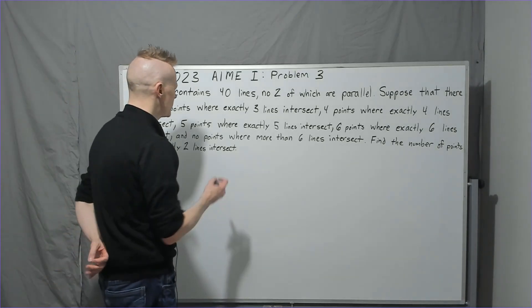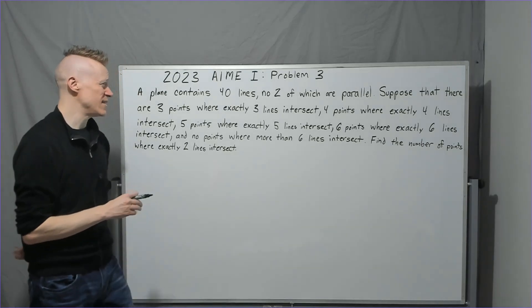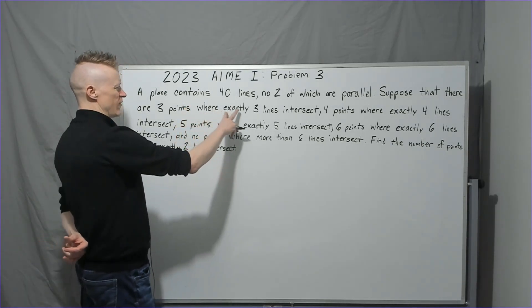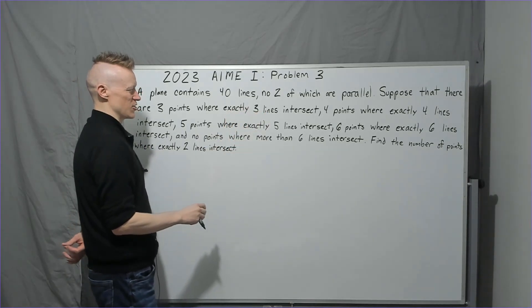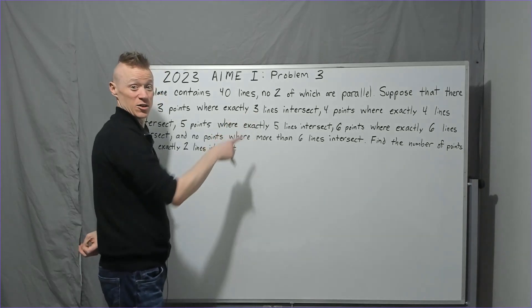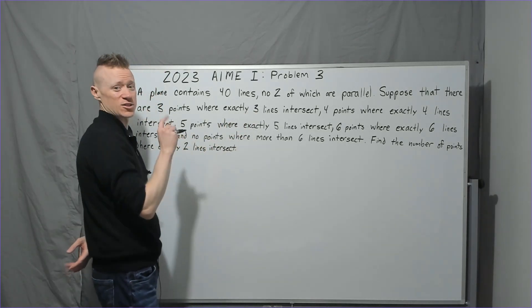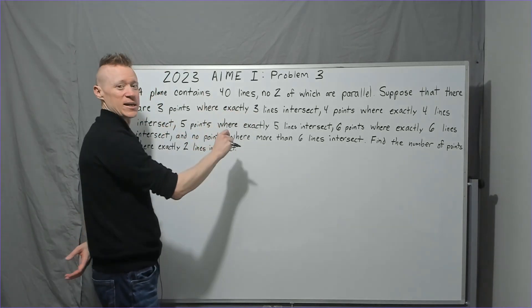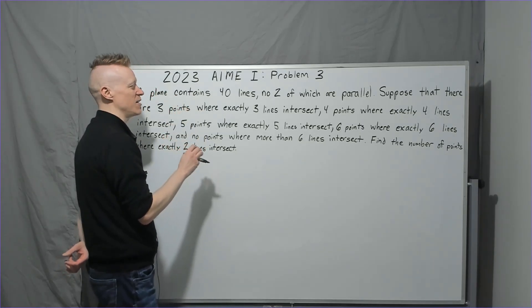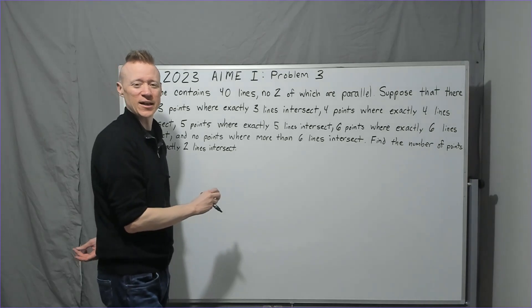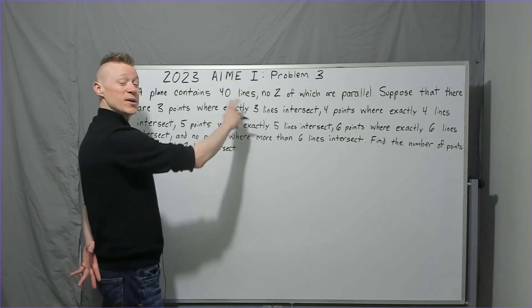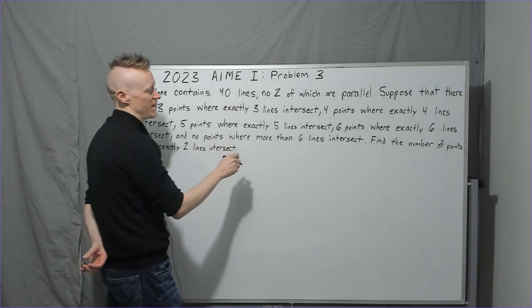Now, these words exactly, we need to understand exactly what they mean. So if it says exactly three lines intersect, it means that there's not four lines intersecting at those points, and there's not two lines, there's exactly three. Usually exactly, not exactly one, exactly three is three and only three. The phrase exactly one means one and only one. Three and only three lines. Make sure we understand that.